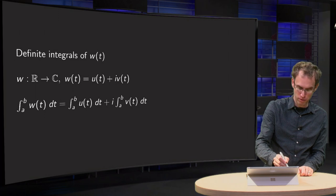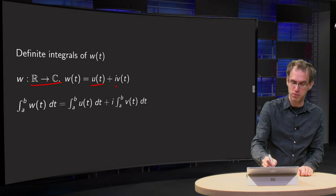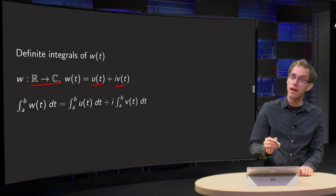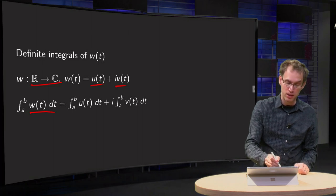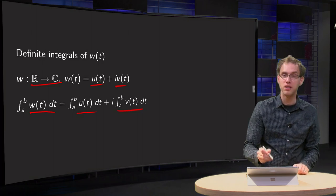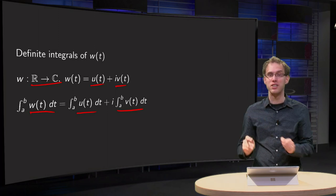So suppose you have some function w from ℝ to ℂ, we split it up again like u(t) plus i times v(t), then the integral of w is the integral of u plus i times the integral of v, so you integrate u and v separately.